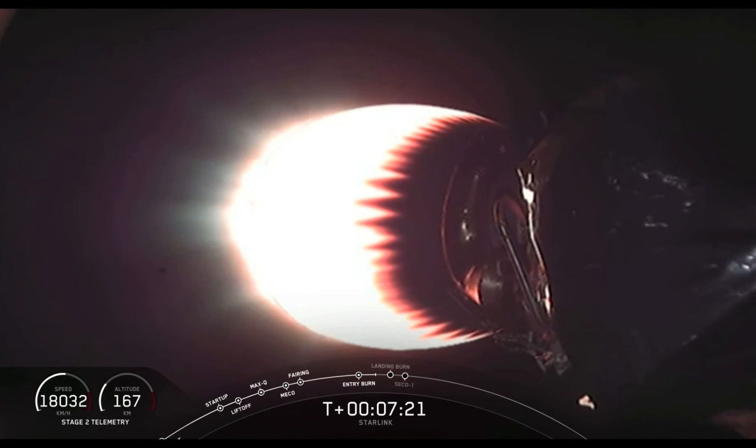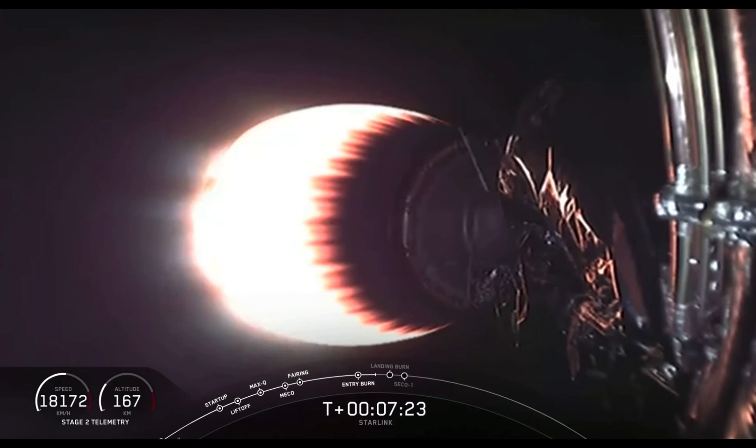stage one is coasting down, steering its way using those grid fins down to the drone ship. At about T plus 8 minutes and 3 seconds, right around there, you're going to see that landing burn start. Stage one entry transonic.